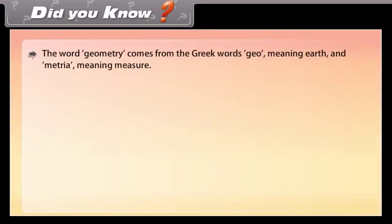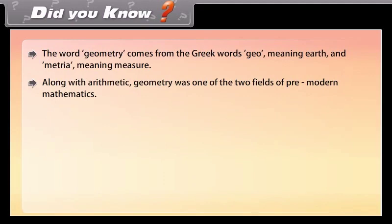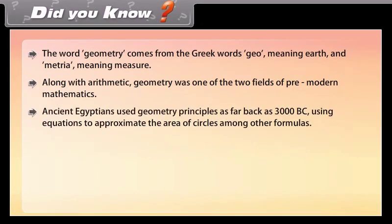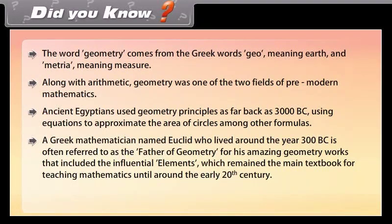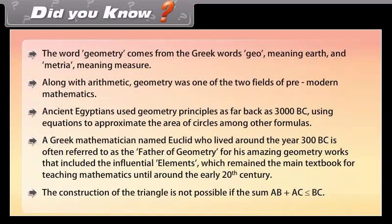Did you know? The word geometry comes from the Greek words 'geo' meaning earth and 'metria' meaning measure. Along with arithmetic, geometry was one of the two fields of pre-modern mathematics. Ancient Egyptians used geometry principles as far back as 3000 BC. A Greek mathematician named Euclid, who lived around 300 BC, is often referred to as the father of geometry. His influential work 'Elements' remained the main textbook for teaching mathematics until around the early 20th century. Note: The construction of a triangle is not possible if the sum AB plus AC is less than or equal to BC.